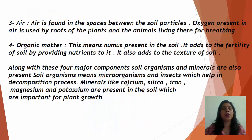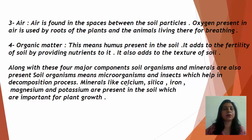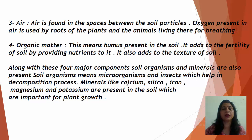The third component is air — air is found in the spaces between the soil particles, and the oxygen present in air is used by the roots of plants and the animals living there for breathing; this also constitutes around 25 percent of the soil mass. The fourth component is organic matter, which means humus. Humus present in the soil adds to the fertility of soil by providing nutrients and also adds to the texture of soil. Along with these four major components, soil organisms and minerals are also present. Soil organisms such as microorganisms and insects help in the decomposition process, while minerals like calcium, silica, iron, magnesium, and potassium are present in the soil and are important for plant growth.